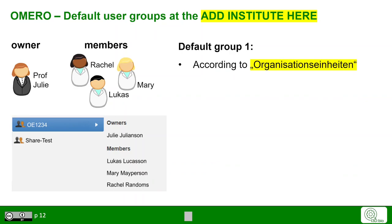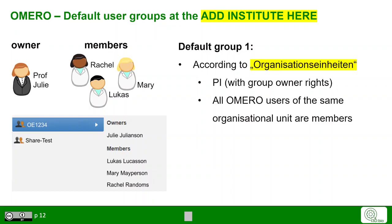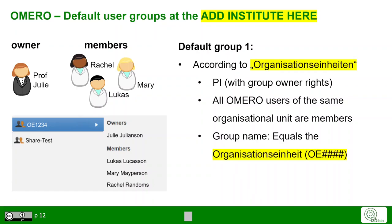Which groups exist in OMERO at the institute? This is very much specific to your own institute. Here is just an arbitrary example from one of the use case partners. In one case, the default group is according to the organizational units at that institution, where the PI is by default the group owner and all the OMERO users of the same organizational unit — i.e., the same research group — become members of that group. The group name equals the organizational unit, and the group type is by default set to private, which can then be changed by the PI if needed.